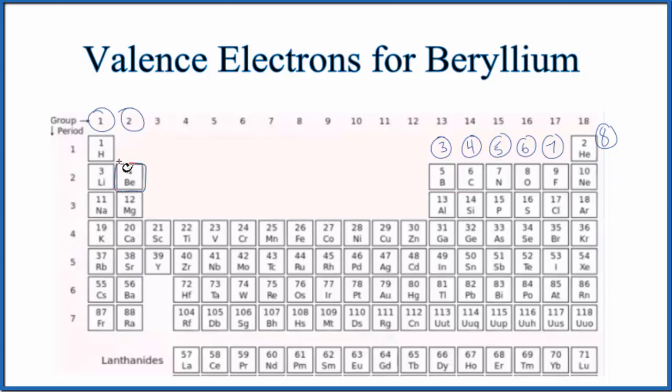And beryllium, right here, is in group 2. So it has two valence electrons. All of these do. Magnesium, calcium, strontium, they have two valence electrons.